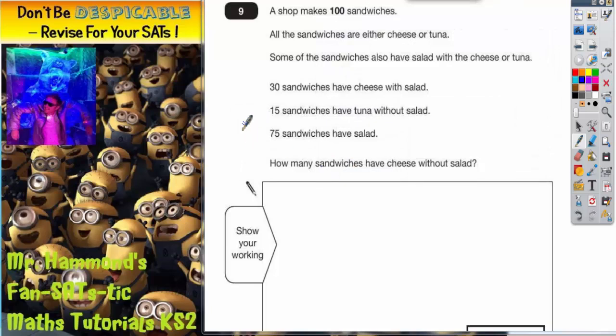Question 9 is a bit of a tongue twister. It says a shop makes 100 sandwiches. That's going to become important later on.